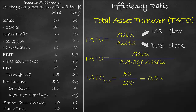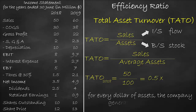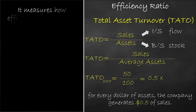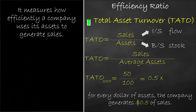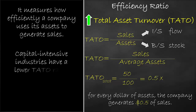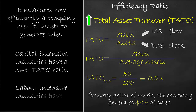The unit of the total asset turnover ratio is times. It means that for every dollar of assets, the company generates $0.5 of sales. The higher the total asset turnover ratio, the better — it measures how efficiently a company uses its assets to generate sales. Capital-intensive industries have a lower TATO, and labor-intensive industries have a higher TATO ratio.